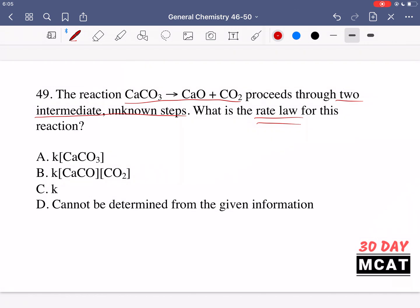In this case we might have said option A, if this was an elementary reaction we might have said that option because it seems to depend only on concentration of that one reactant, but we don't know that it's an elementary reaction. We're actually specifically told that it's not because it has two intermediate unknown steps.